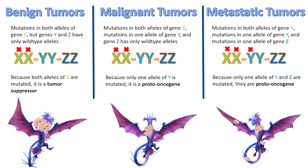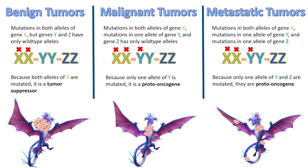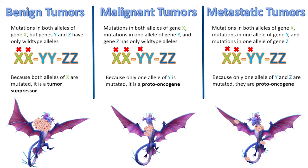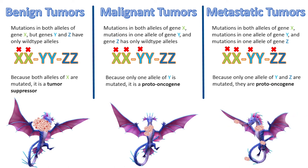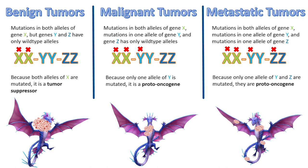Next, we have malignant tumors, which spread to surrounding areas. Gene Y is responsible for this. Only one allele of Y needs to be mutated because it is a proto-oncogene. Having both X alleles mutated along with a Y allele creates malignant tumors in the dragon. Last, we have metastatic tumors. In addition to having both X alleles and one Y allele affected, these tumors need a single Z allele, making it a proto-oncogene. Therefore, the expression of a single allele for gene Y and gene Z leads to the development of cancerous tumors in these dragons.